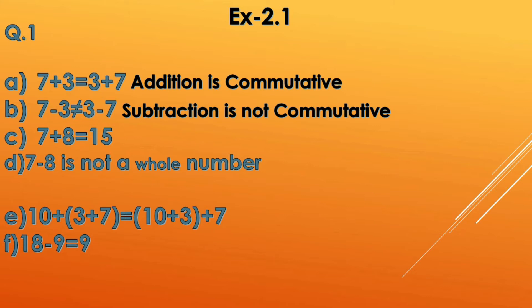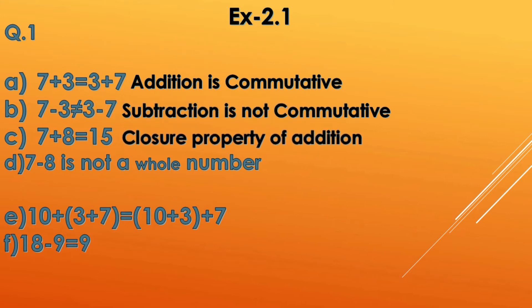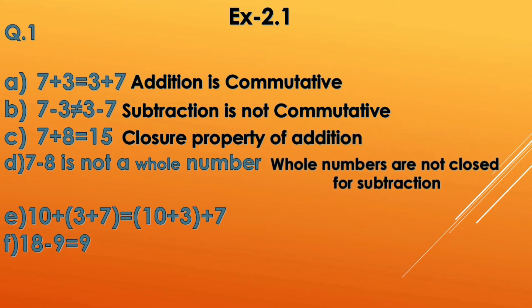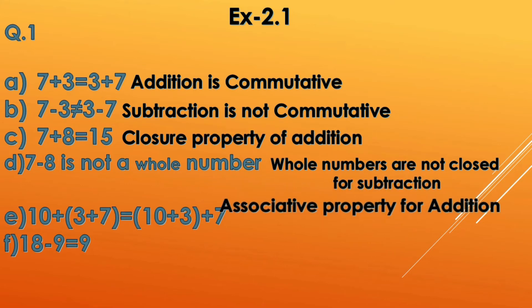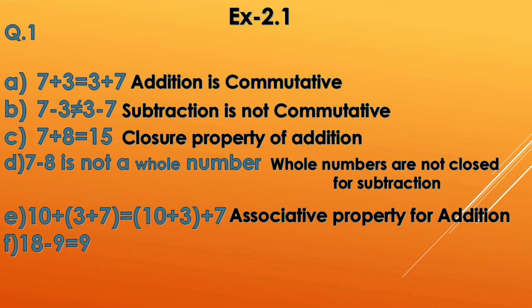In option c, when adding two whole numbers we get the answer also as a whole number — that is the closure property of addition. In option d, 7 minus 8 is not a whole number, so whole numbers are not closed for subtraction because the answer is minus 1. In option e, they are changing the group — first taking the group of 3 and 7, then the group of 10 and 3 — so this is the associative property of addition.